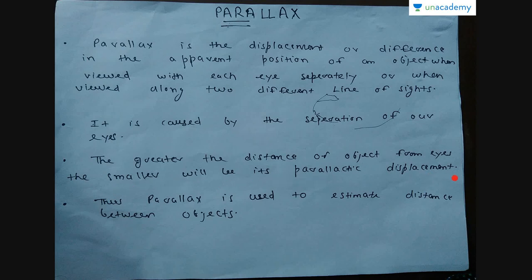As the object moves farther away from the eye, there will be less parallax displacement. So you can see that this gives an insight into the distance between the object and the eye. Thus, parallax is used to estimate distance between objects.